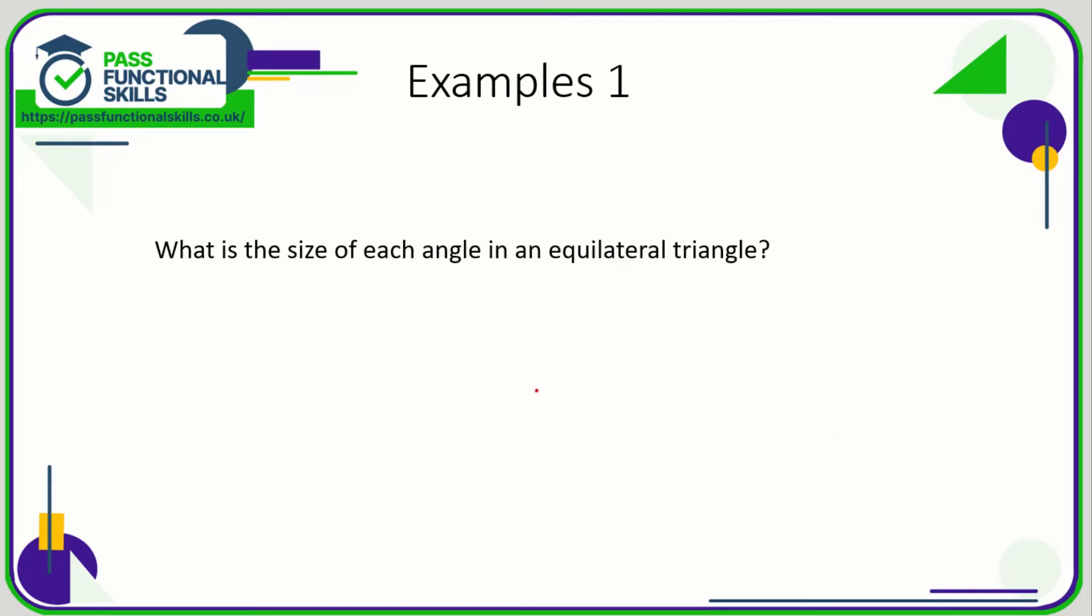What's the size of each angle in an equilateral triangle? Well, we don't need to even draw the equilateral triangle, but the key thing about an equilateral triangle is that all the sides are the same length and all the angles are the same as well. Now, angles in a triangle add up to 180, so if all these angles are the same, let's just divide 180 by 3. 180 by 3 is 60 degrees, so every angle is 60 degrees in an equilateral triangle.